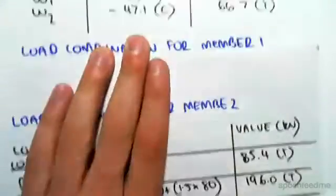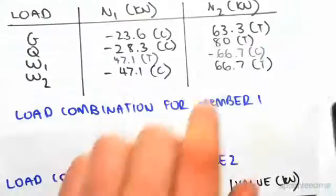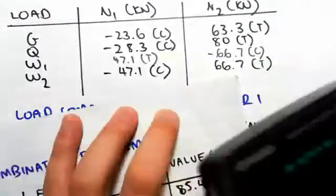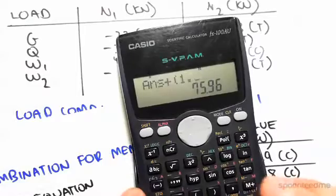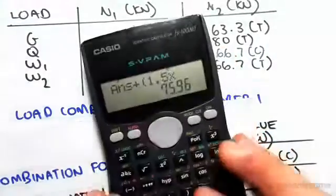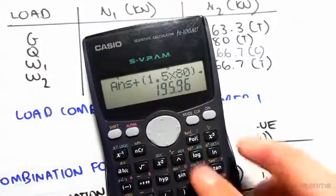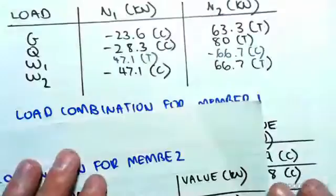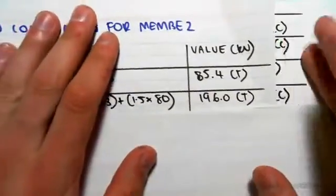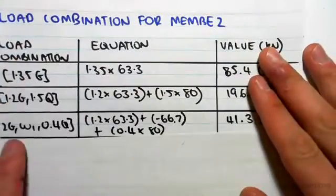Next one is 1.2G plus 1.5Q, so 1.2 times 63.3 plus 1.5 times Q, which is 80, gives 195.96. That rounds to 196.0 in tension.